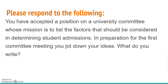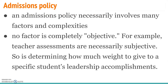The first assignment is that you've accepted a position on a university admissions committee. Your job is to list the factors to be considered when looking at admissions. Before your first meeting, jot down your ideas about what you think should be considered in determining admissions. You have to understand that admissions policy necessarily involves many different factors and complexities. There is no factor that's completely objective — even teaching assessments are subjective. How do we decide how much weight to give leadership accomplishments, sports, volunteer work, or whatever other factors you choose to look at?